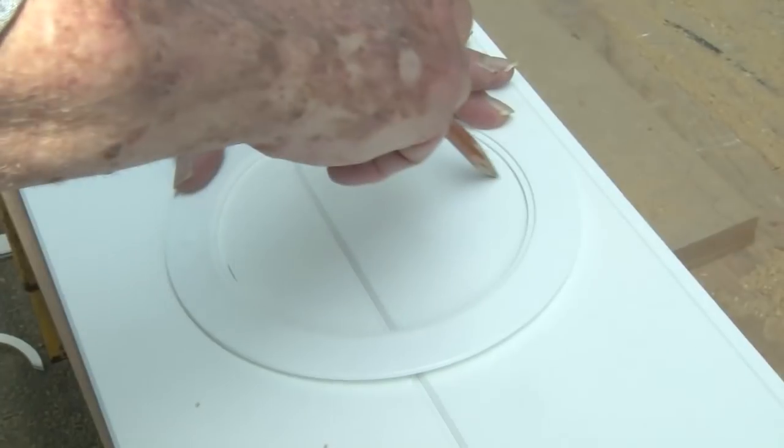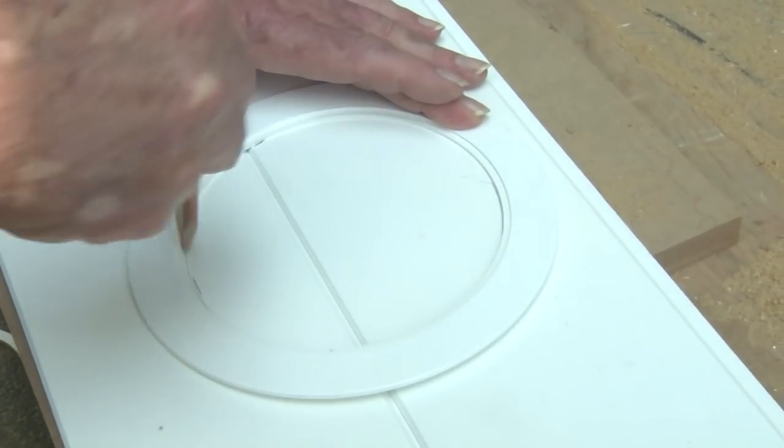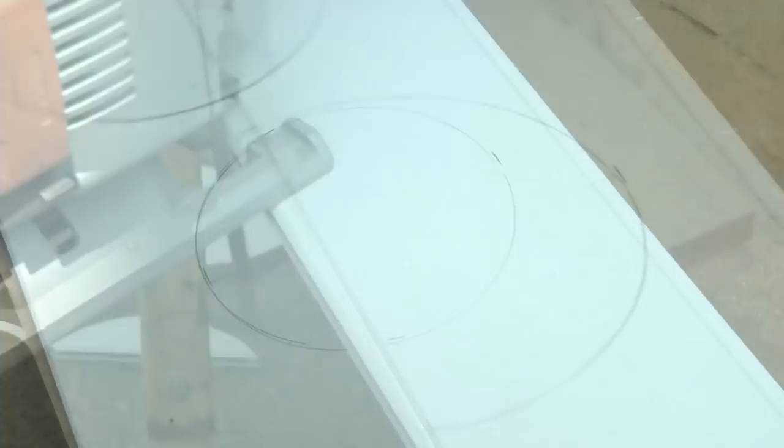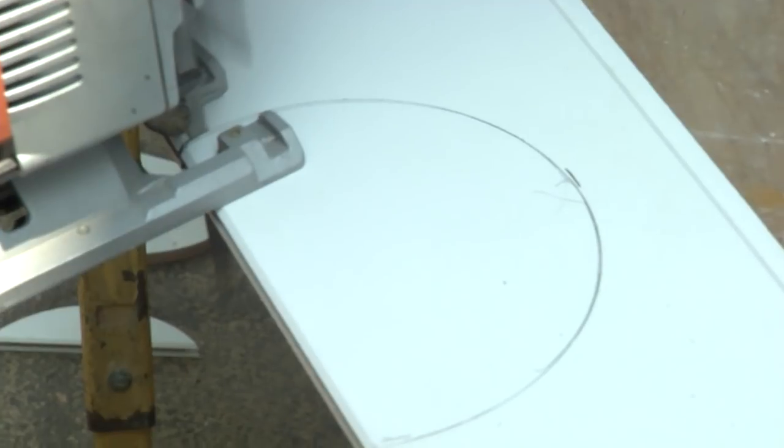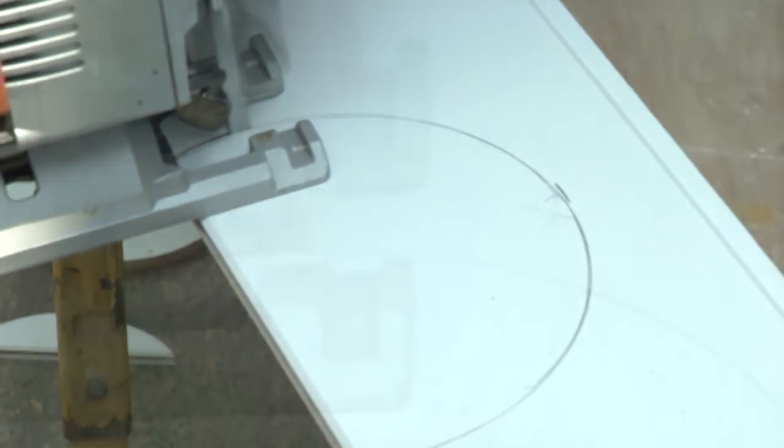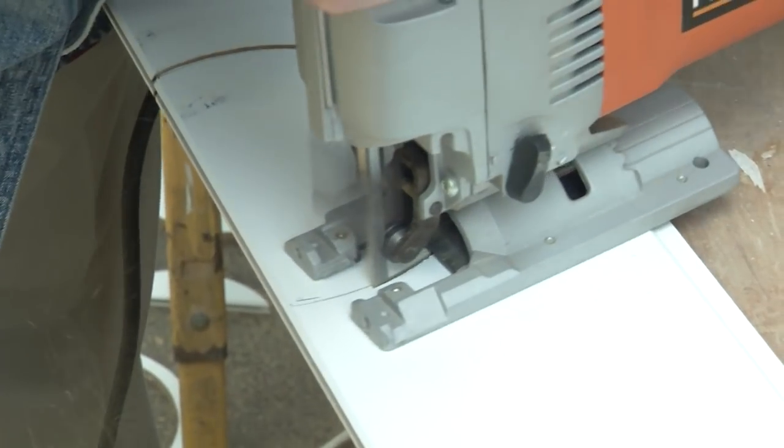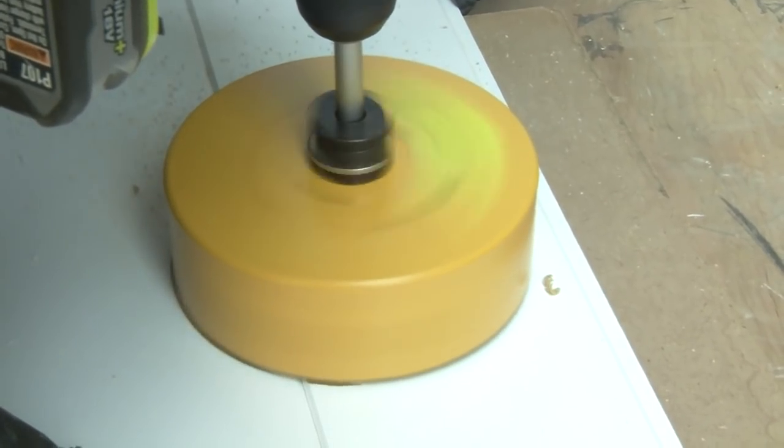Another option would be to use the recessed light trim plate as a template. The light fixture holes can be cut using a jigsaw, or a large hole saw.